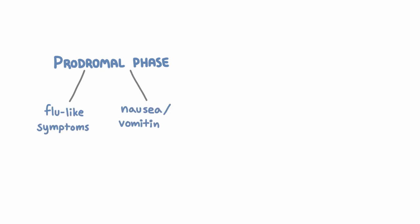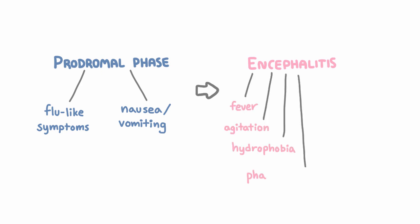So how does rabies look clinically? Well, first you have a prodromal phase with flu-like symptoms, nausea, vomiting, and then only after that do you get encephalitis, with fever, agitation, hydrophobia, meaning fear of water, pharyngeal spasms,